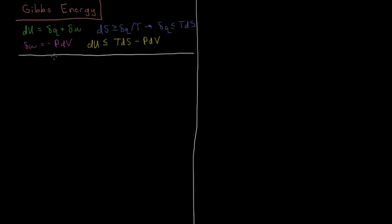Combining these together, we have that the change in internal energy is less than or equal to TdS minus PdV. Taking this expression, we're going to subtract TdS plus PdV from each side, giving us dU minus TdS plus PdV is less than or equal to zero. Now we're going to be concerned with processes that occur at constant temperature and constant pressure, and we want to define a state function which is going to be less than or equal to zero for a spontaneous process under those conditions.